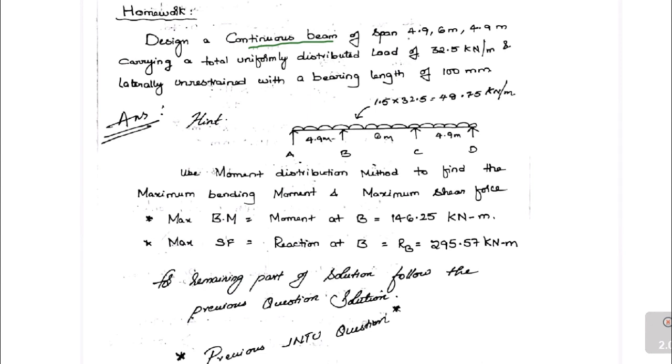This is a continuous beam of span 4.96 and 4.9 meters as shown in this figure, carrying a UDL of 32.5 kilonewtons per meter and laterally restrained with bearing length of 100 mm. This is the bearing length which is B.